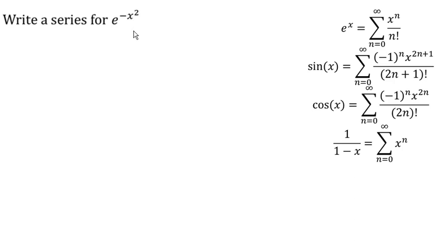We want to write a series for e to the negative x squared. And we're going to take advantage of our known Maclaurin series here. So here we know that e to the x is equal to the sum of x to the n over n factorial.